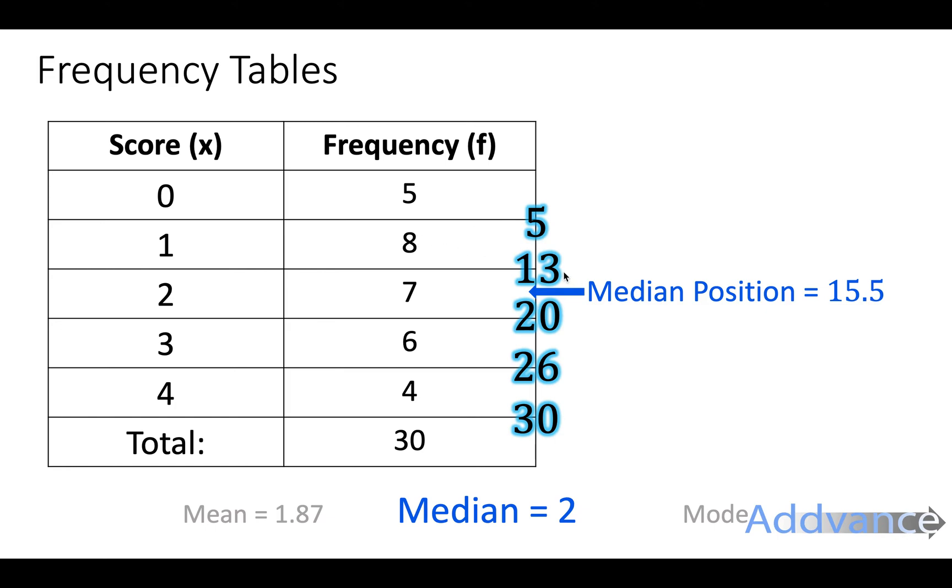I then looked for where 15.5 lay between these numbers here, and it was between 13 and 20. It was in this row. That's how I work out the median.